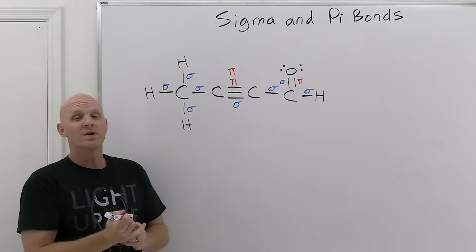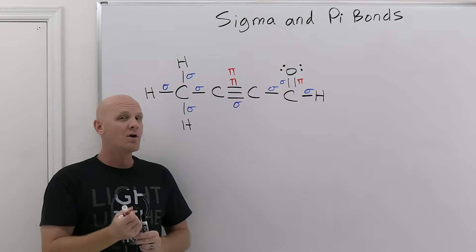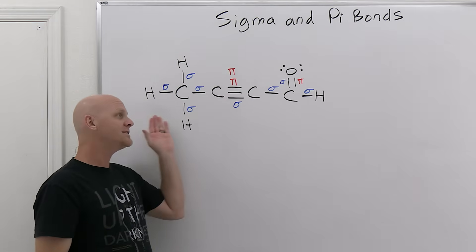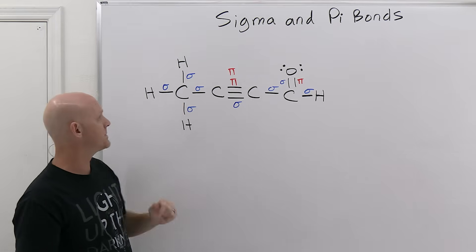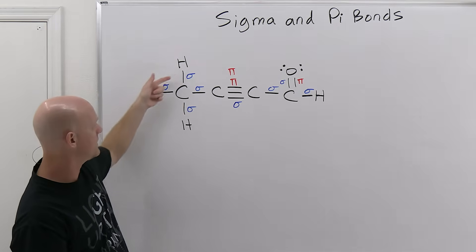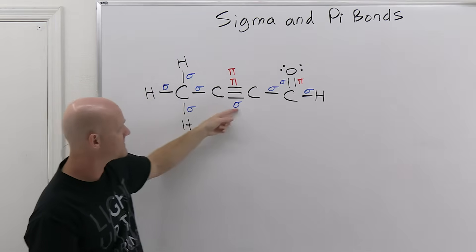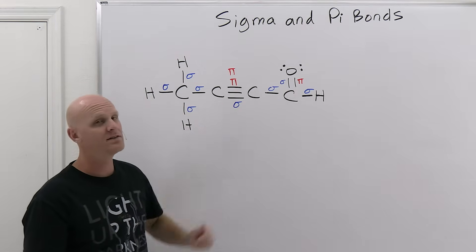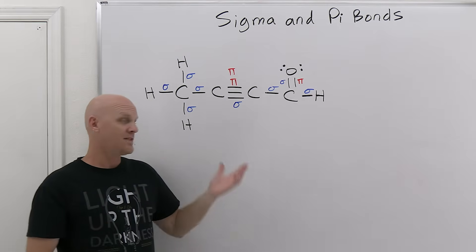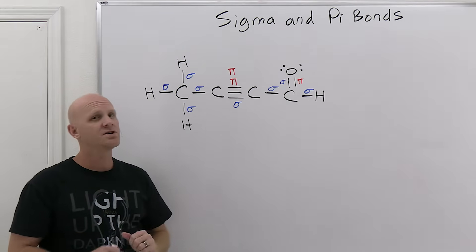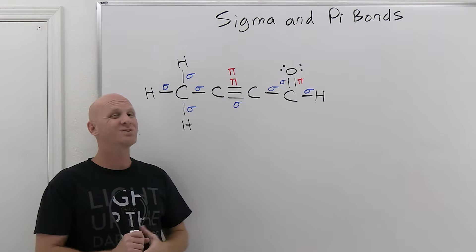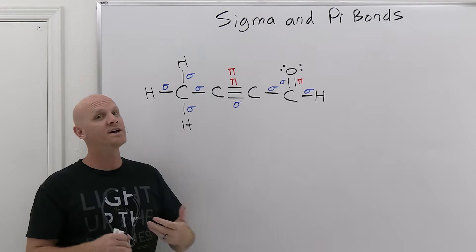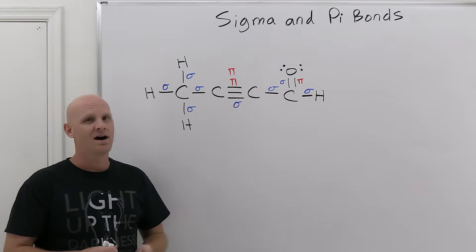So without even knowing what a sigma or a pi bond is, we can identify them in a Lewis structure and count them up. In this case, we've got eight sigma bonds and three pi bonds. Now, that may be a typical question you get on the test, but you also have to know a little bit more about what a sigma or pi bond is.